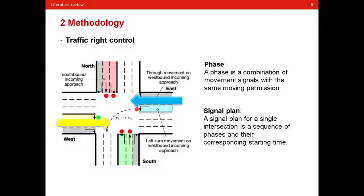A signal plan for a single intersection is a sequence of phases and the corresponding starting time. So those are the key words in traffic light control.